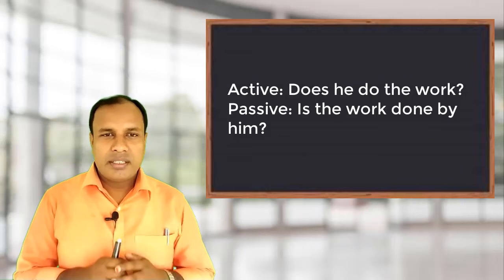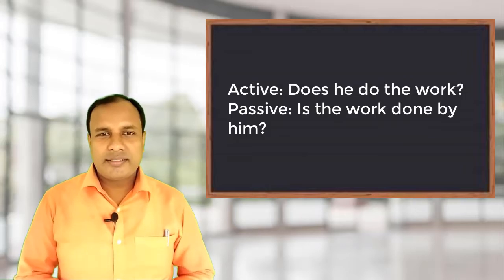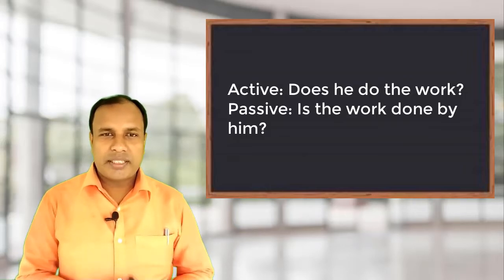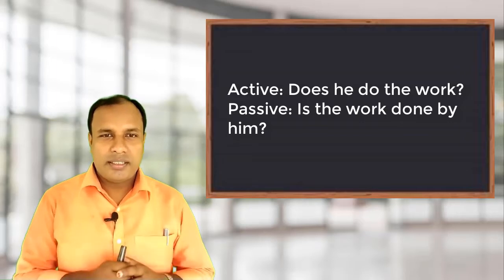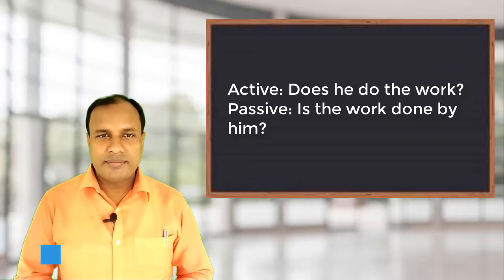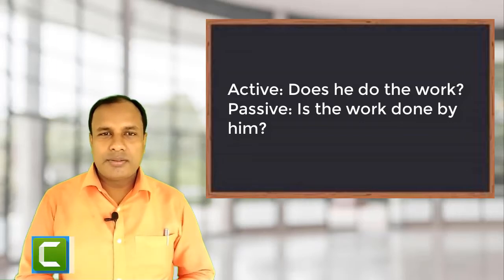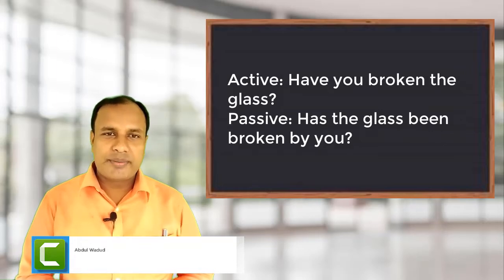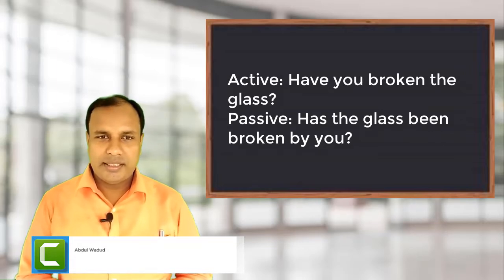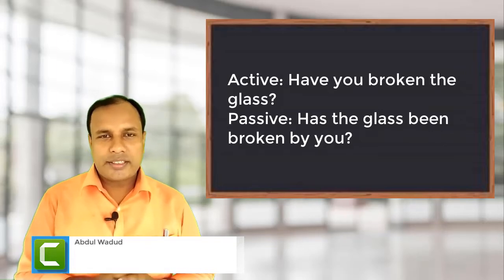For example: 'Does he do the work?' Passive becomes: 'Is the work done by him?' Another example: 'Have you broken the glass?' Passive becomes: 'Has the glass been broken by you?' — these are yes/no questions.